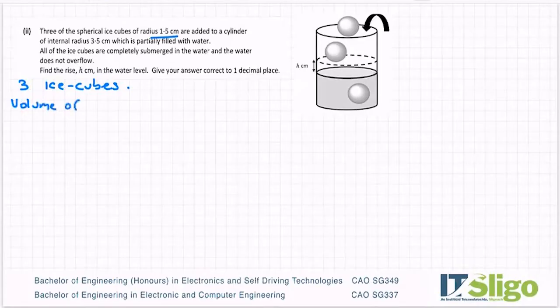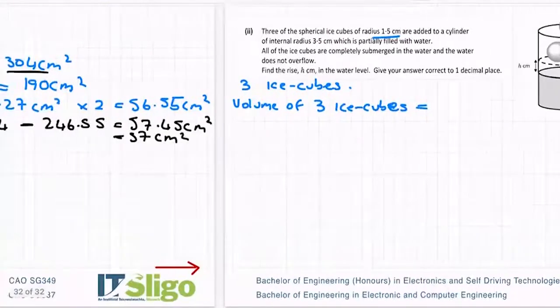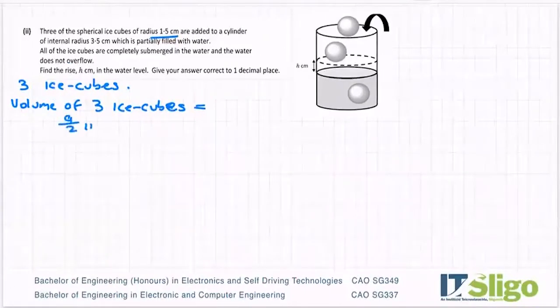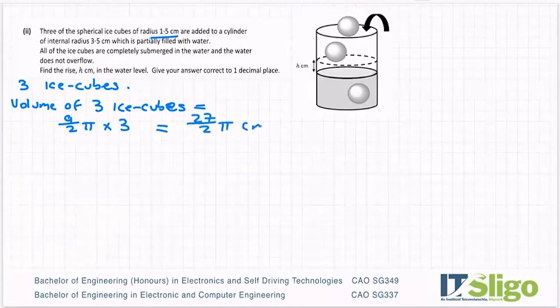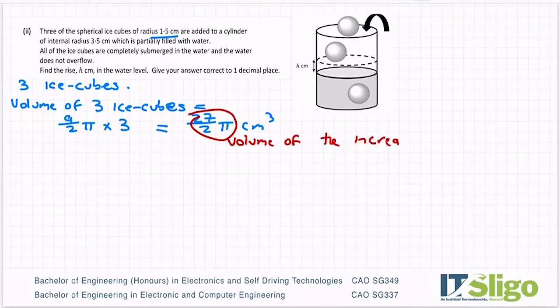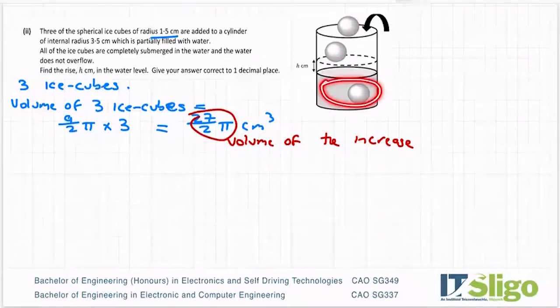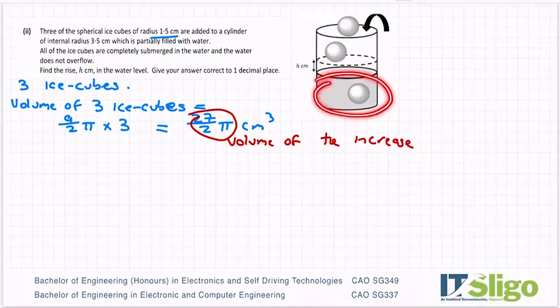So this is the hardest type question they can really ask, or it's one of the hardest ones they'll ask on volume. And it's when something changes height. So the theory behind it is when you add in something into your liquid and it rises, it rises by the volume of whatever you added in. So to explain that with an example, you added in three ice cubes. Now we did get the volume of them. So volume of the three ice cubes equals 9 over 2 pi by 3, I'm going to multiply that by 3, and it's 27 over 2 pi centimeters cubed. So that is volume of the increase.